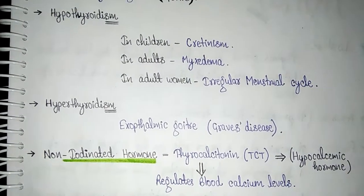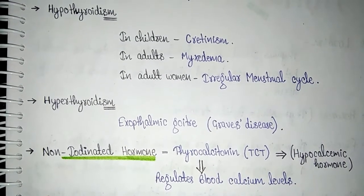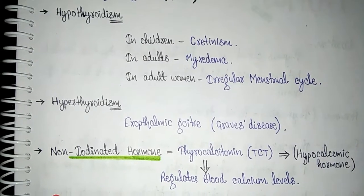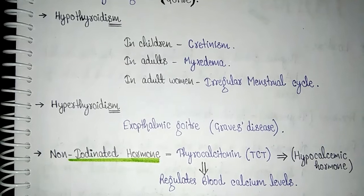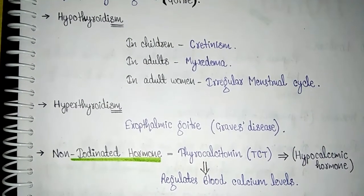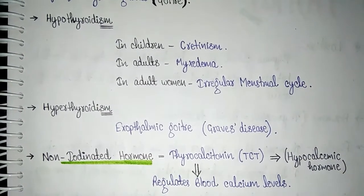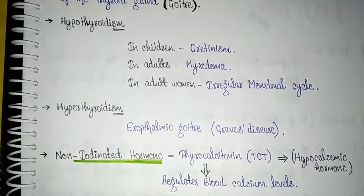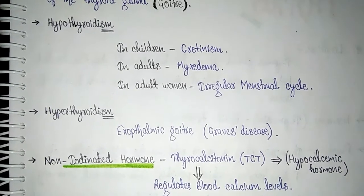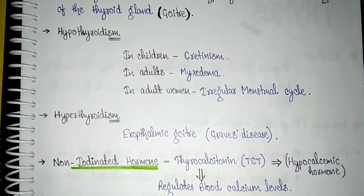In hyperthyroidism, the hormone is over-secreted, often due to cancer of the thyroid gland. This causes a condition called exophthalmic goiter, also known as Graves' disease. Its symptoms include increased basal metabolic rate, weight loss, protrusion of eyeballs (where the eyeballs bulge outward), and enlargement of the thyroid gland.